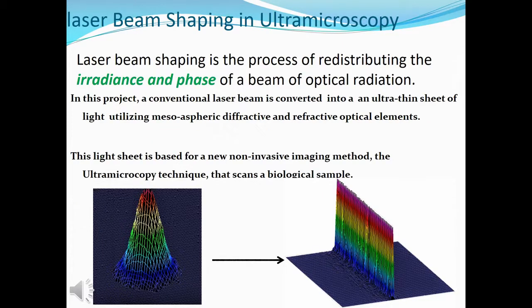The base of this design is to do laser beam shaping. You can convert a laser beam to anything you like. Here we would like to reshape a bell-shaped beam, which we call Gaussian, into a very thin sheet of light.